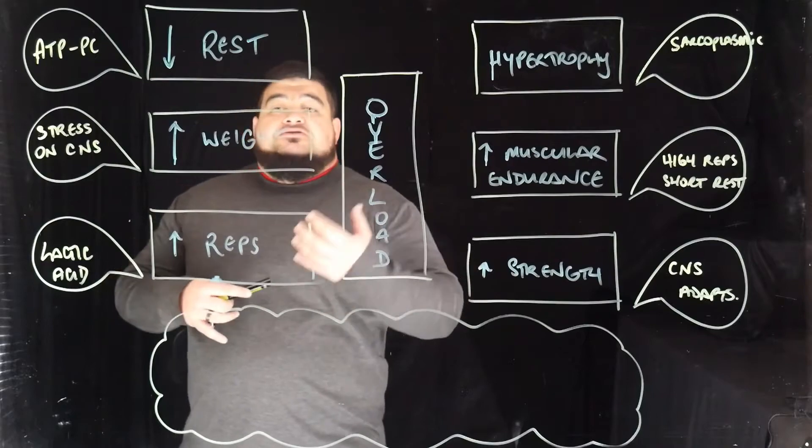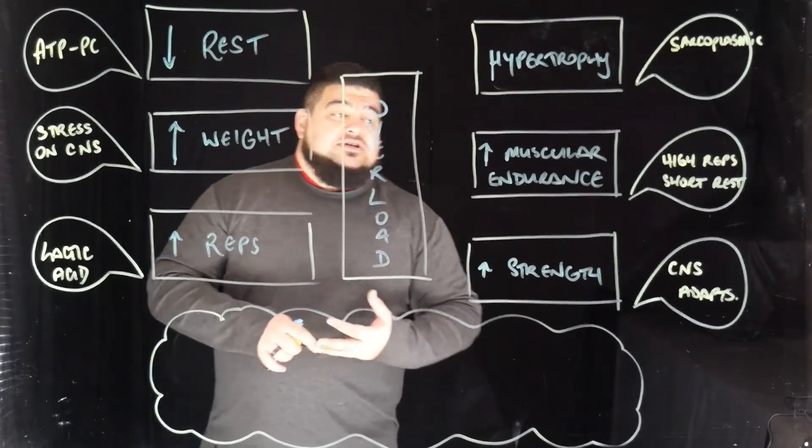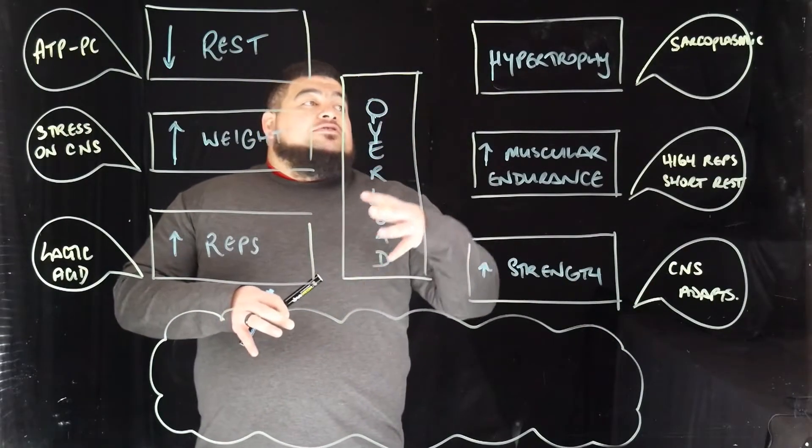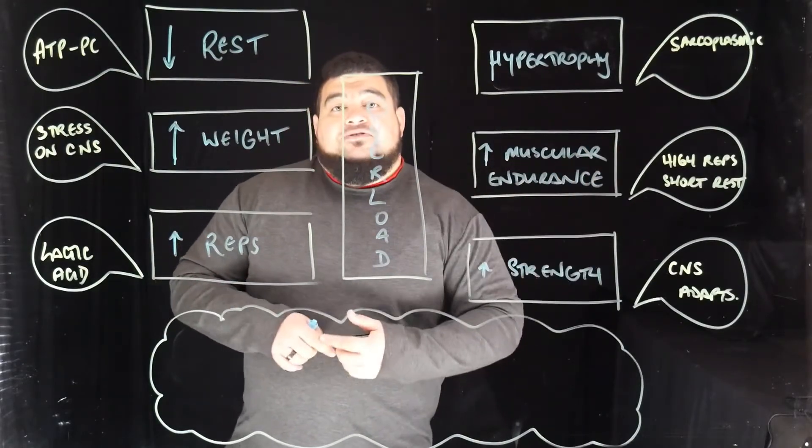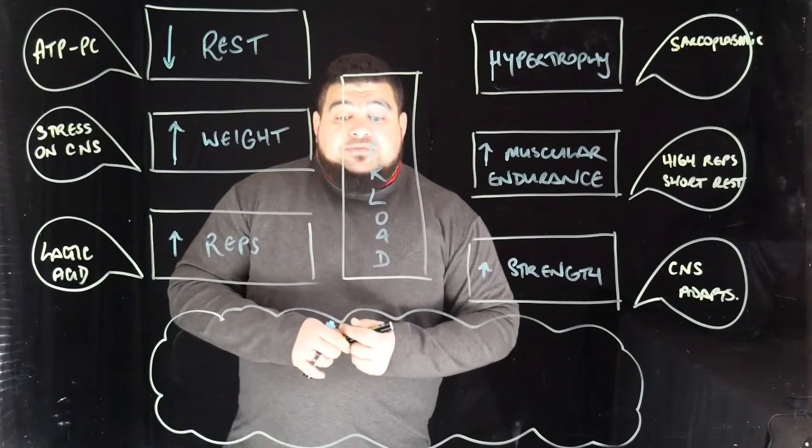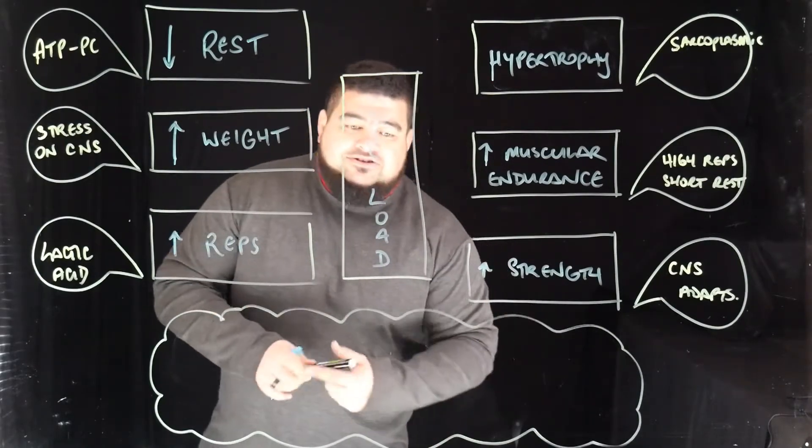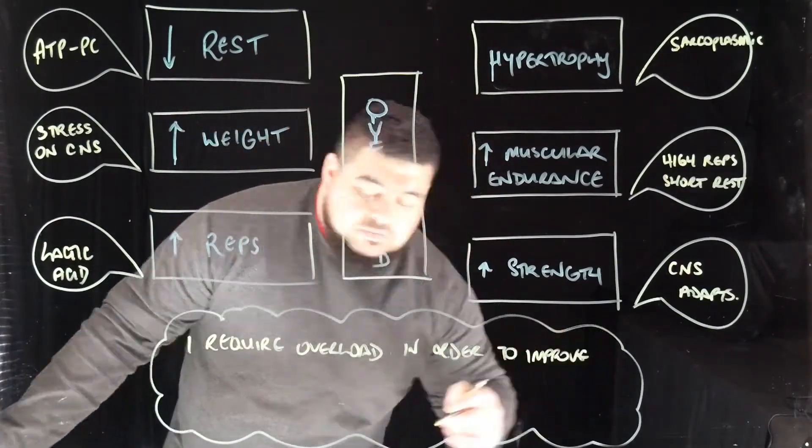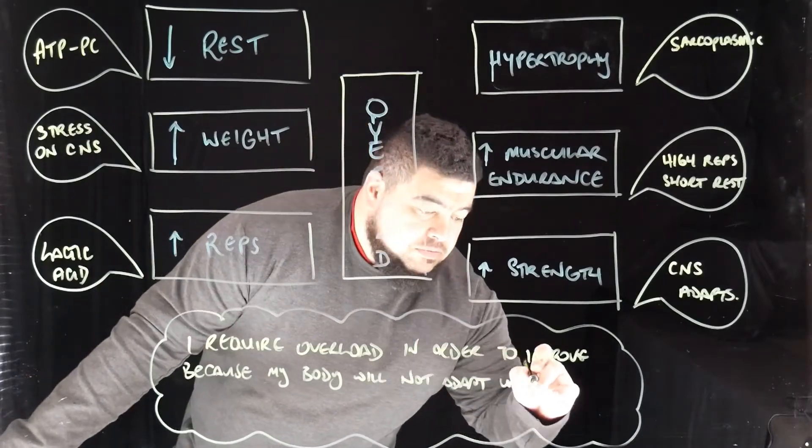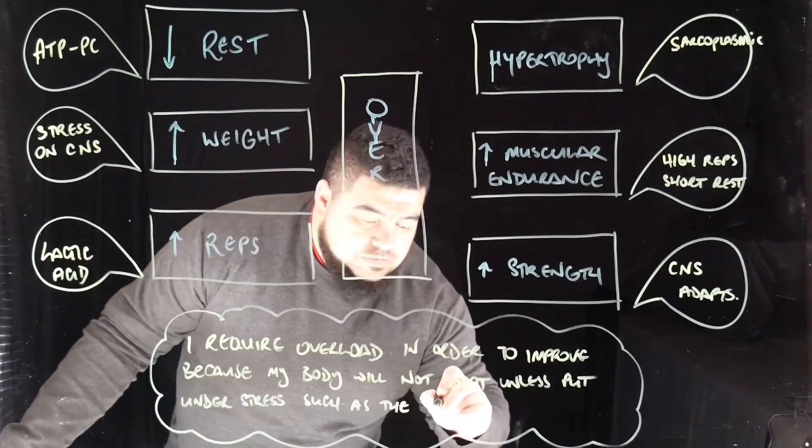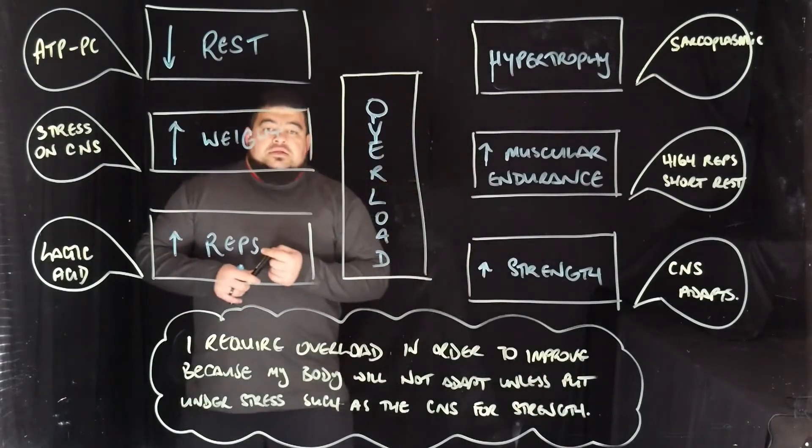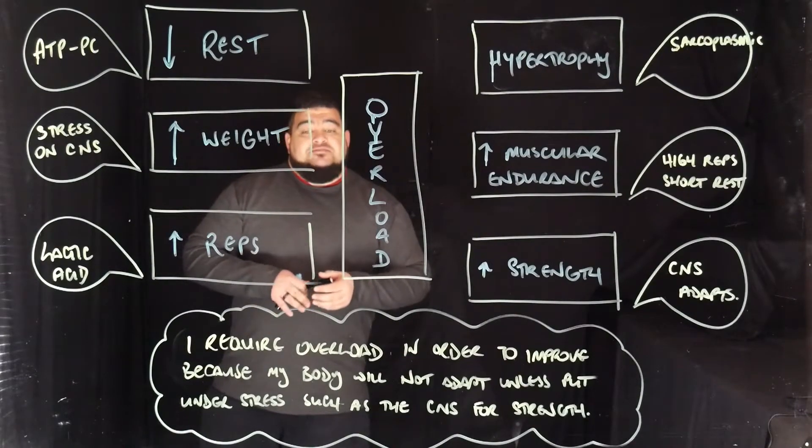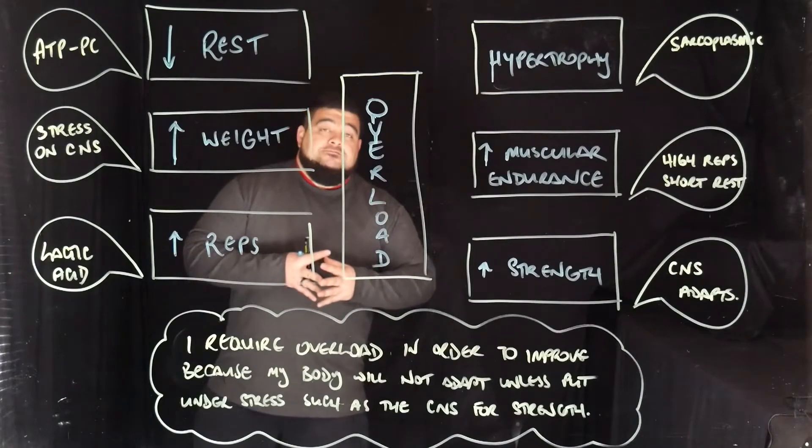This is because the central nervous system needs to adapt - I need to increase my reps and decrease my rest so that I can reach that overload. So we'll write down a generalization. My example: I require overload in order to improve because my body will not adapt unless put under stress, such as the central nervous system for strength.